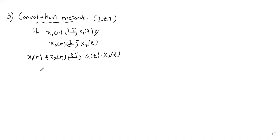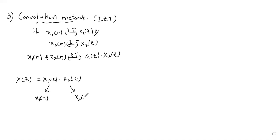How can we use this theorem to find the inverse Z-transform? Whatever Z-domain function is given, it is going to be split into two functions. After converting it into a product of two functions, we identify their individual inverse transforms. Then X of n, the inverse Z-transform of X of Z, is nothing but X1 of n convolved with X2 of n.